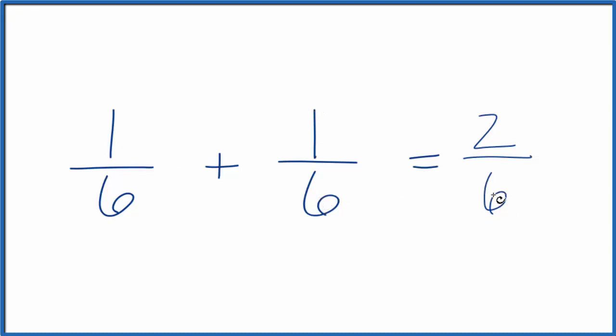So one-sixth plus one-sixth, that's two-sixths. And that's not surprising. We have one-sixth here, one-sixth here, and now we have two-sixths.